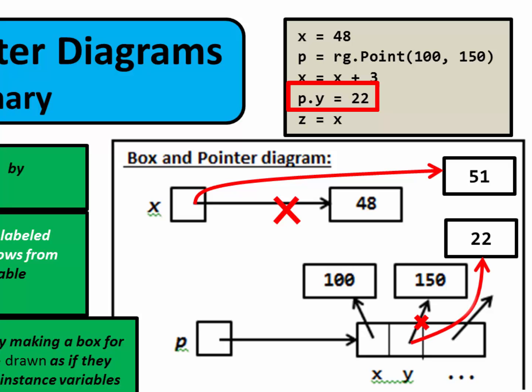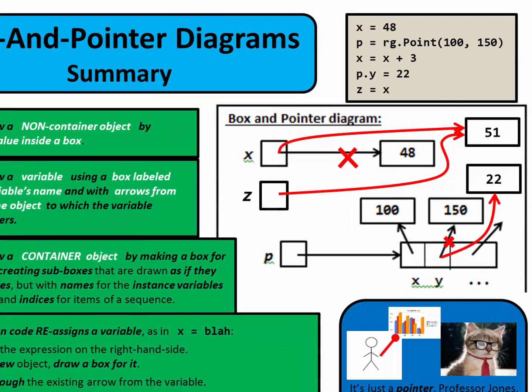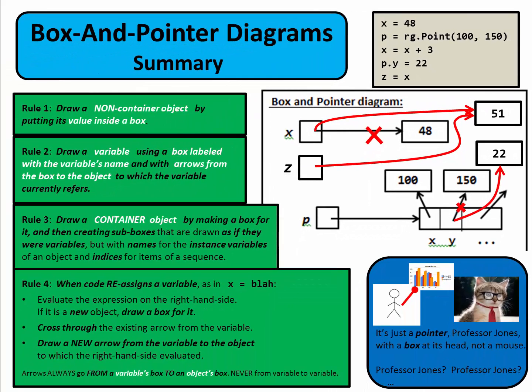Keep in mind that assignment changes arrows, and that arrows always go from a variable's box to an object's box, and you'll do well. Box and pointer diagrams show what it means for a variable to refer to an object, and they're useful for all sorts of reasons. Simply keep these four rules in mind when you draw some box and pointer diagrams, and you'll do fine.